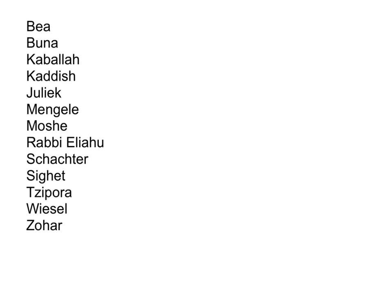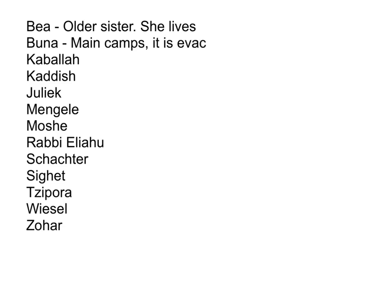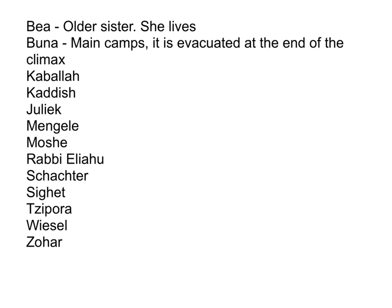What should you know about these characters? Baya is Elie's older sister — she lives through the story. Buna is one of the main camps, and it eventually gets evacuated at the end of the climax. Kabbalah is Jewish mysticism — that's the thing that Elie wants to learn. The Kaddish is the prayer for the dead.